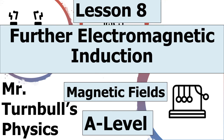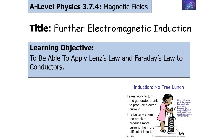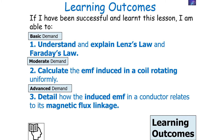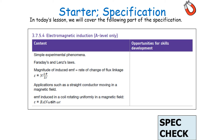Hello and welcome to today's lesson on further electromagnetic induction, which is part of the magnetic fields topic in AQA A-level physics. In today's lesson, we're going to look at applying Lenz's law and Faraday's laws to conductors. If we're successful, we should be able to understand and explain Lenz's law and Faraday's law, calculate the EMF induced in a coil rotating uniformly, and detail how the induced EMF in a conductor relates to its magnetic flux linkage, which is part of the AQA A-level physics specification.